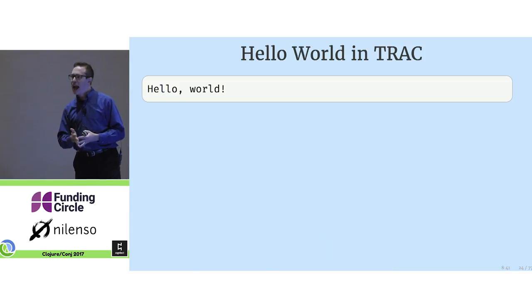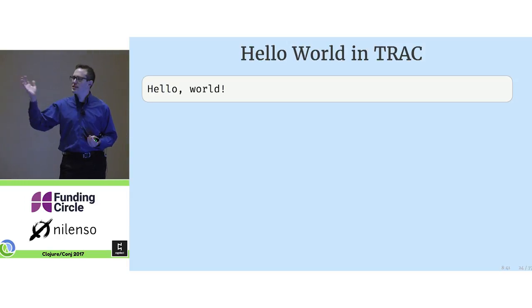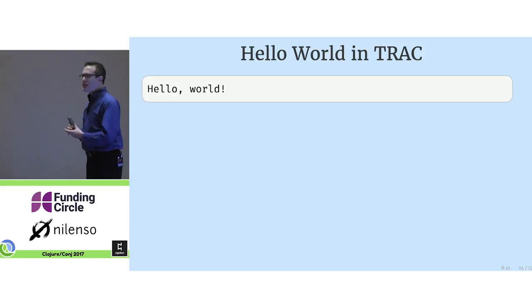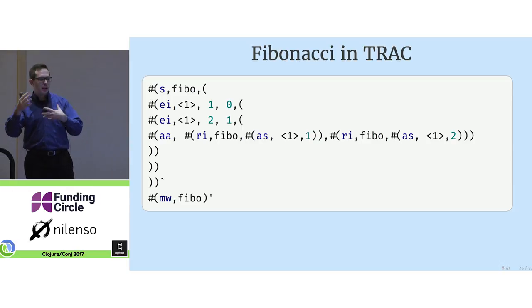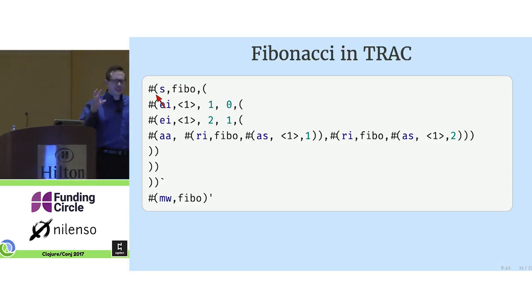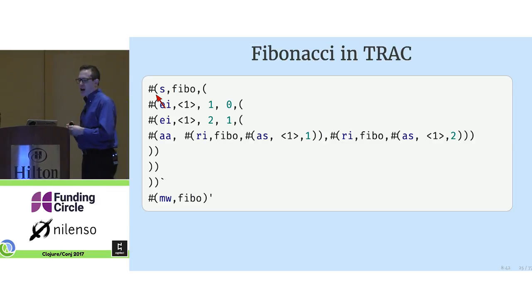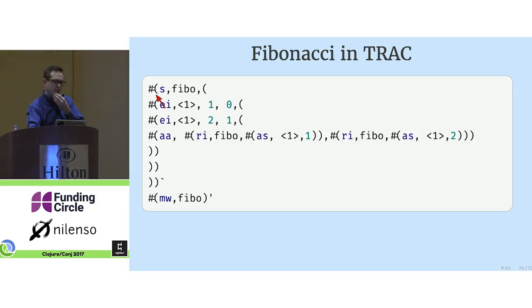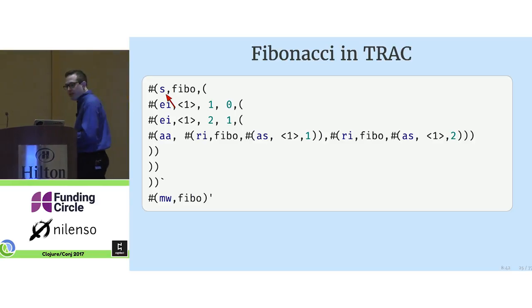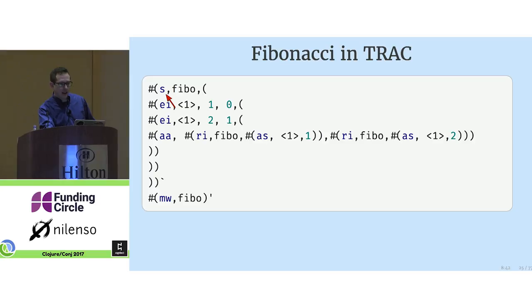They invented this language called TRAC. Any text input to TRAC is just output verbatim — the most boring Hello World program in existence. To escape from the output into the programming language itself, you write an expression starting with hash-paren. It looks, if you squint, vaguely Lisp-like. Since this was a PDP-1 they didn't have a lot of memory, so everything has very short terse names. S means store in this name — fibo — a block. E is an equality test on the first argument: if the first argument equals 1, return 0; if it equals 2, return 1.